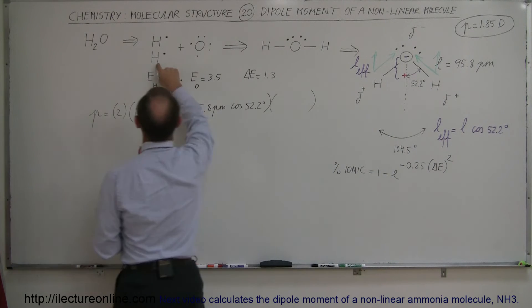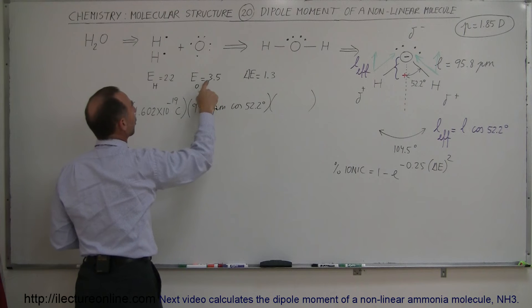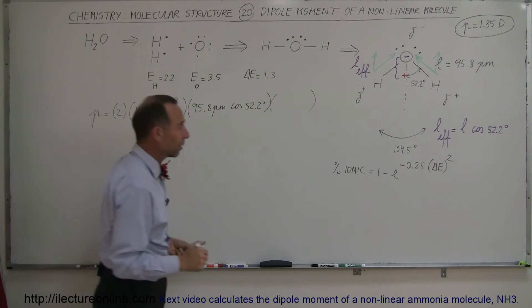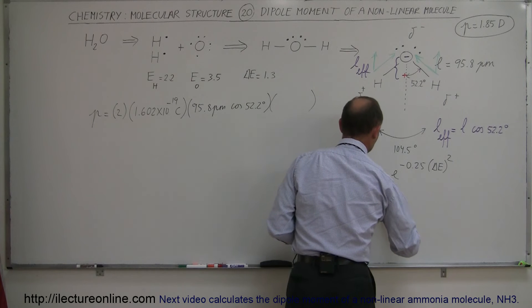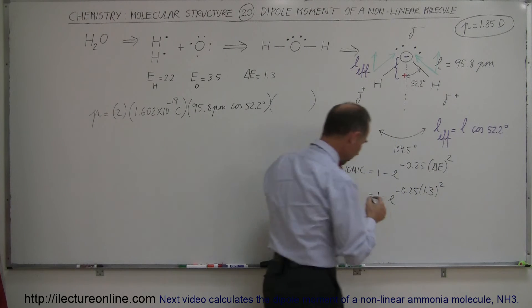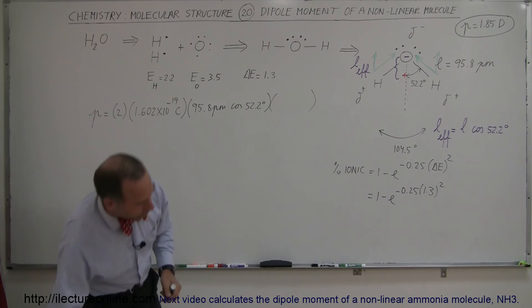Notice electronegativity for hydrogen, 2.2. For oxygen, 3.5. The difference, 1.3. So let's plug that number in. So this is equal to 1 minus e to the minus 0.25 times 1.3 squared. So let's find out what that is equal to.